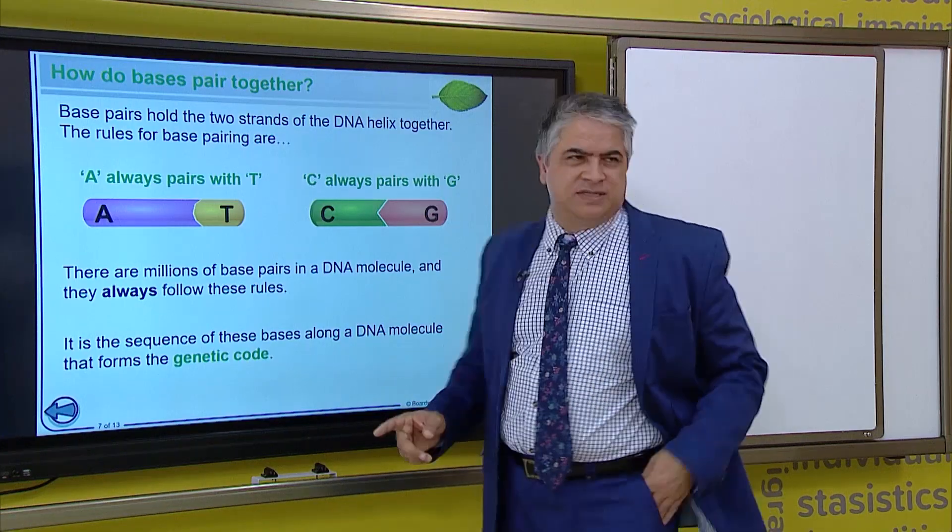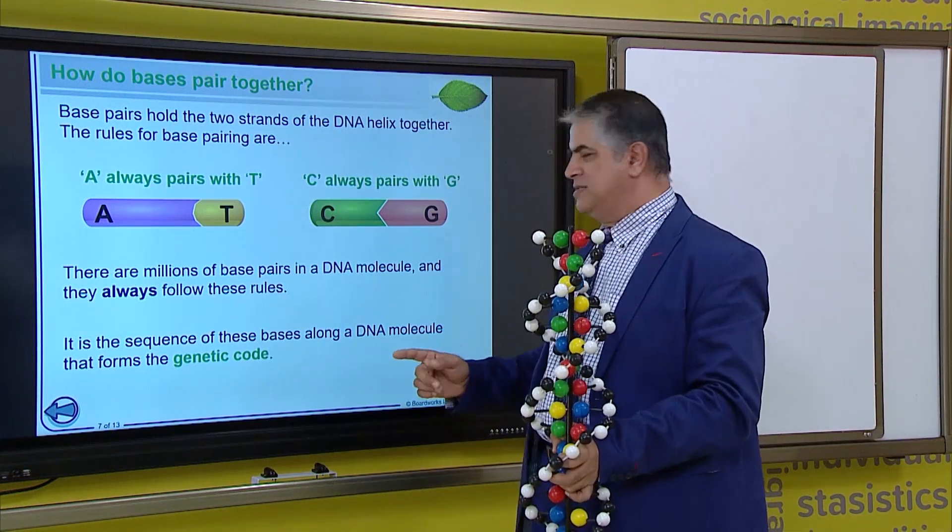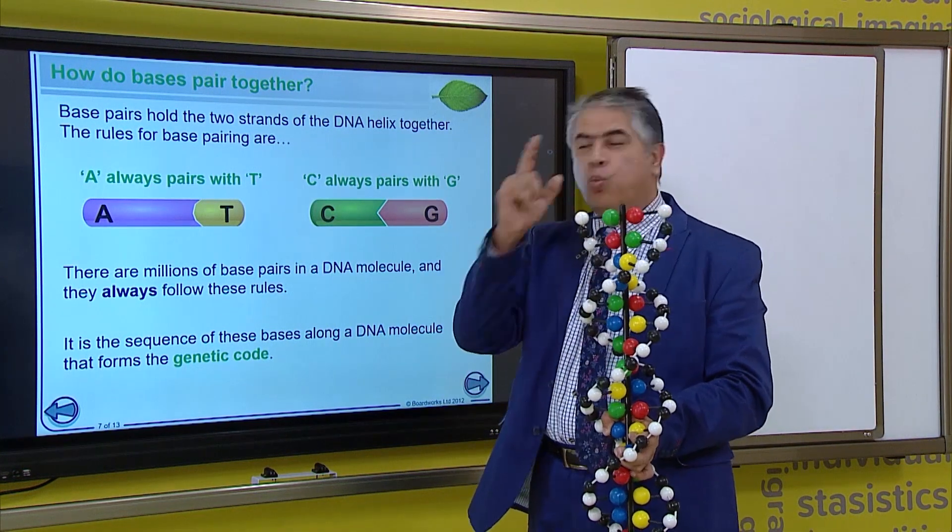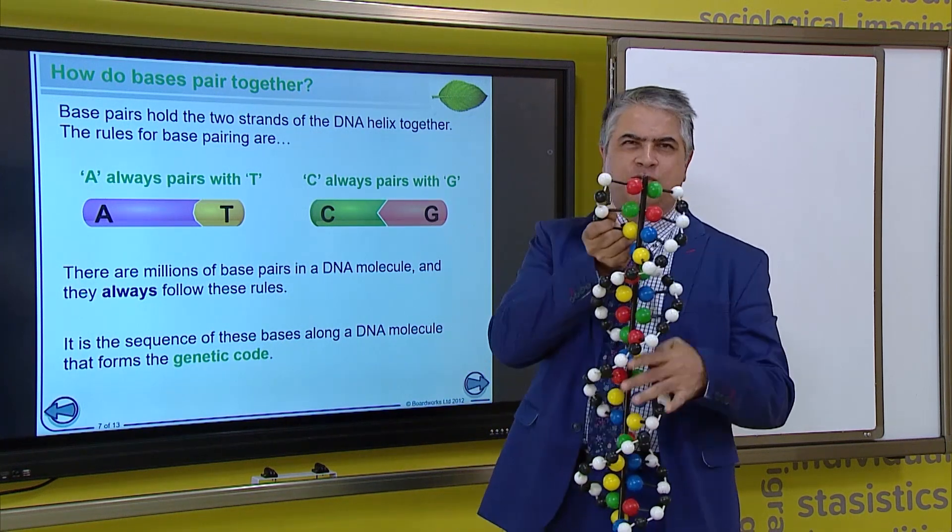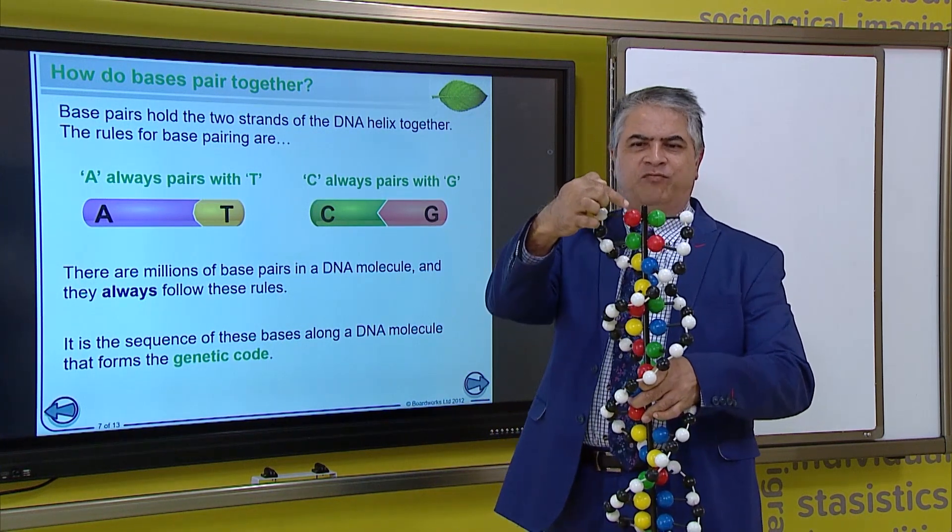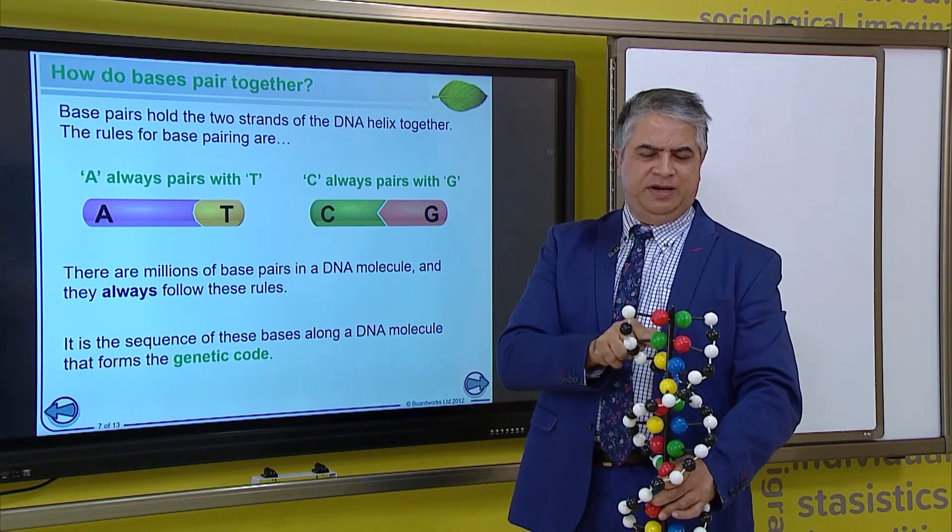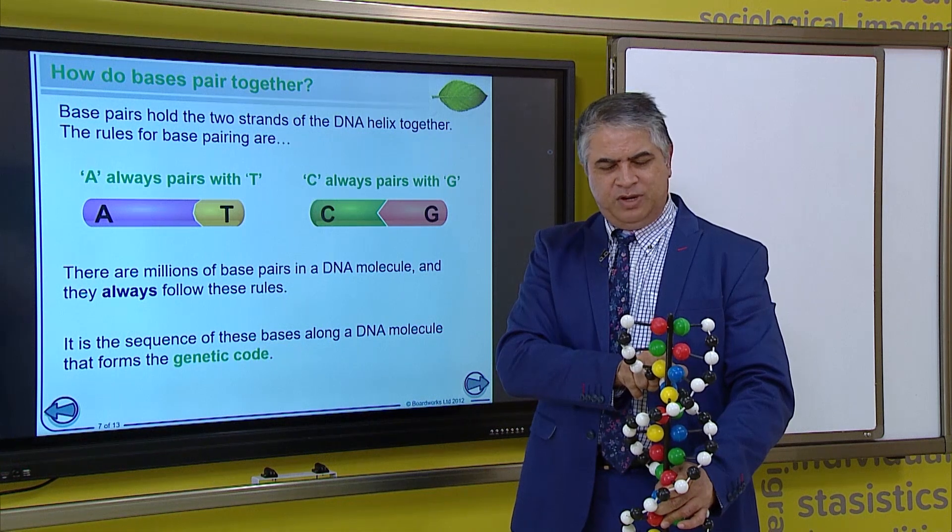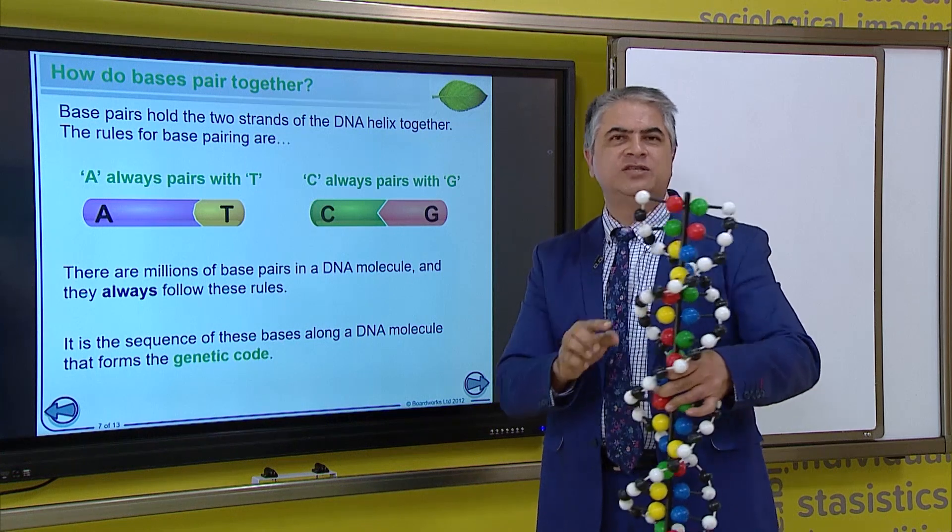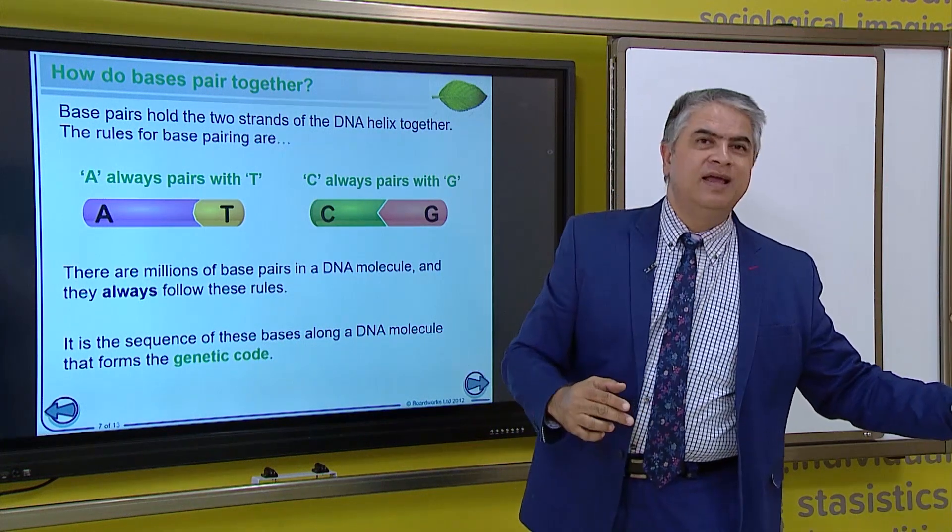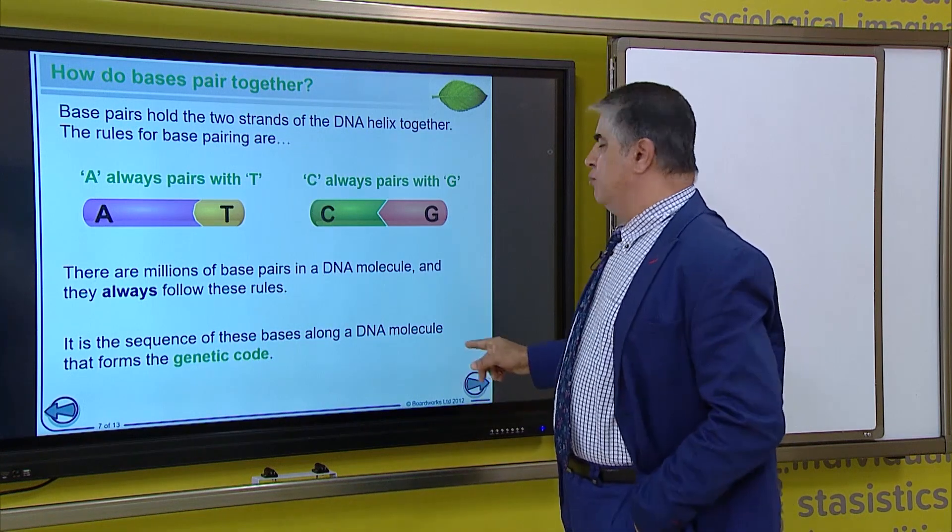Now, the sequence, the sequence of these base pairs is what holds the genetic code. As you can see, the sequence starts red, green, yellow, blue. And it moves on to yellow, red, yellow. So, that sequence has the genetic code for that molecule.